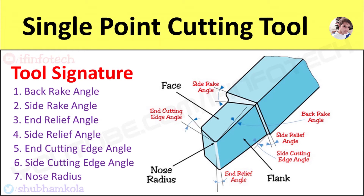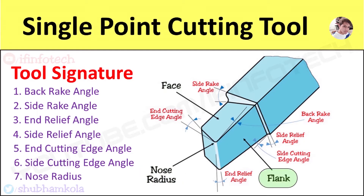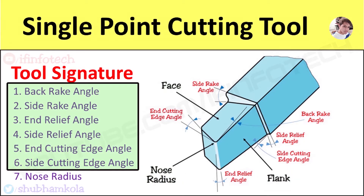Hi everyone. In this video we will discuss nomenclature of single point cutting tool. The elements are cutting edge, face, nose radius, flank, and these six angles.